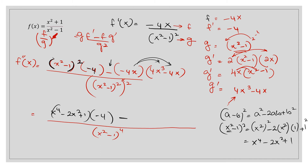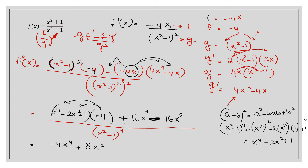Now multiply negative 4x with (4x cubed minus 4): negative times negative gives positive. Multiplying 4x through: 4 times 4 gives 16x to the power 4, plus 16x times negative gives minus 16x squared. Then opening the bracket with negative 4 against (x to the 4 minus 2x squared plus 1) gives: negative 4x to the power 4, plus 8x squared, minus 4. Adding the 16x to the power 4 minus 16x squared, all divided by (x squared minus 1) to the power 4.